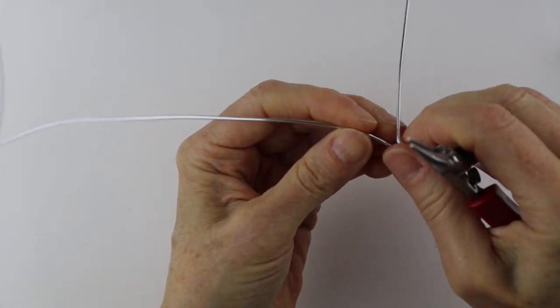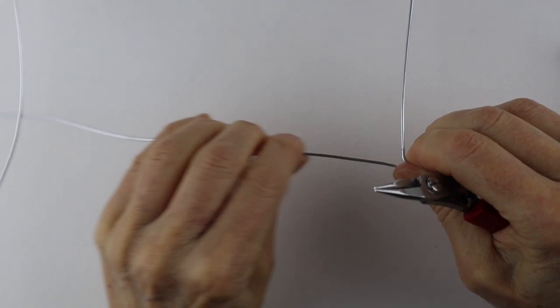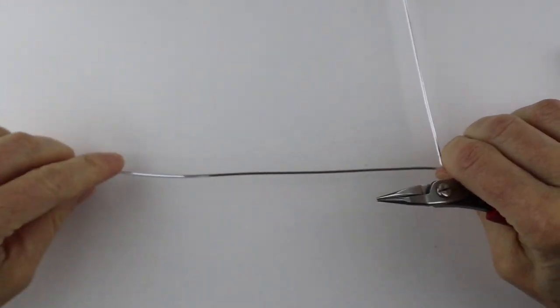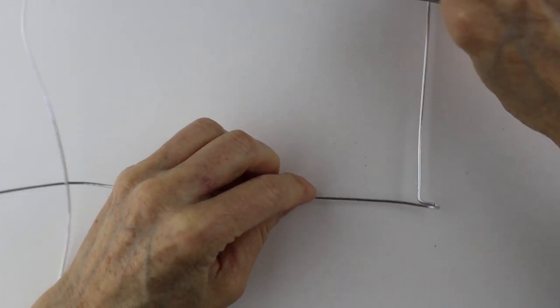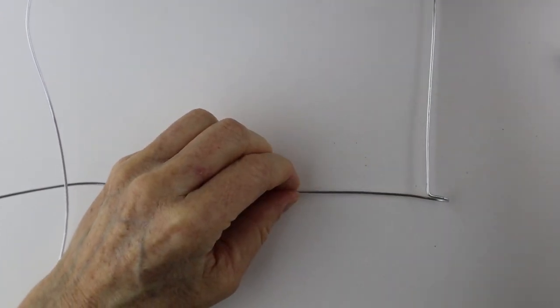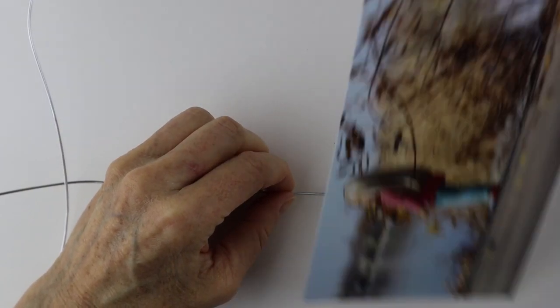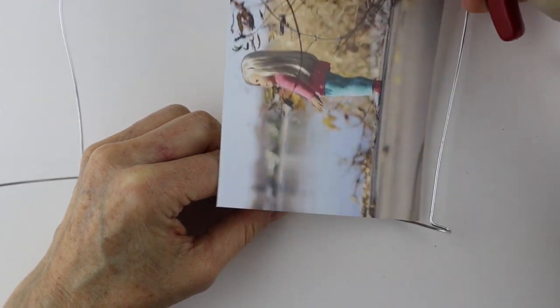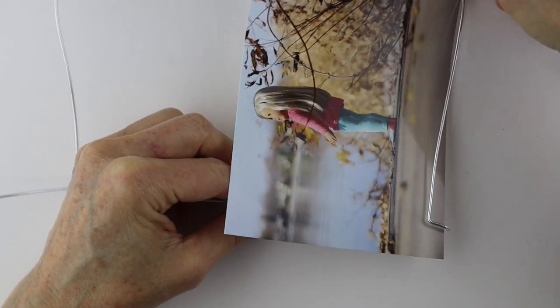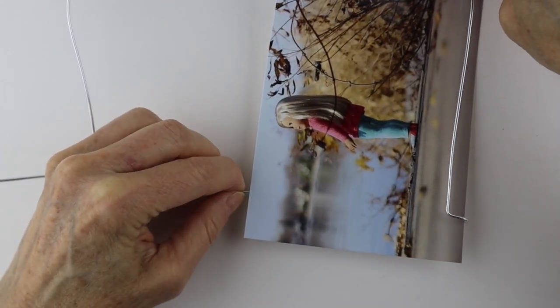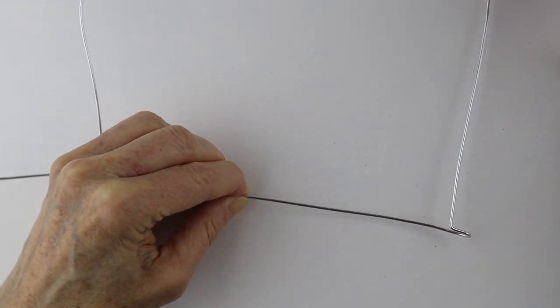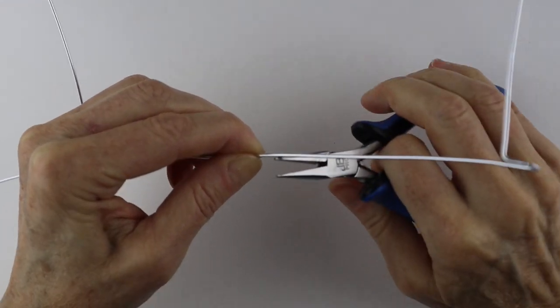So just compare them to make sure they're the same and you can always measure them with the ruler if you want. Now we're going to take this and measure how high we want it. We probably want it a little bit above the photo, so just do that little measurement and we can bend this one across.